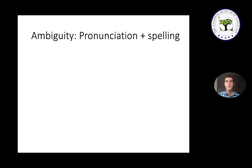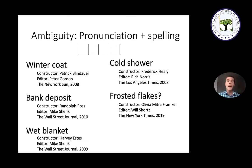A second type of ambiguity works both with pronunciation and spelling. To illustrate it, here are five different clues that all lead to the same four-letter answer: 'winter coat,' 'bank deposit,' 'wet blanket,' 'cold shower,' and 'frosted flakes' — and the answer to all five is SNOW. In 'winter coat,' 'coat' means something that coats the ground. In 'bank deposit,' it's a snow bank vs. a financial bank. 'Wet blanket' refers to something that blankets the ground; 'cold shower' means a snow shower; and 'frosted flakes' means snowflakes frosted with ice rather than corn flakes frosted with sugar.